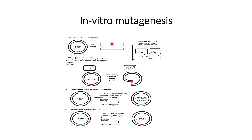A PCR reaction is carried out on the original vector. After the PCR product is formed, it will be transfected into bacteria containing recombineering proteins. Those bacteria help in combining the PCR product into a desired vector with the desired mutation, as shown in the figure.